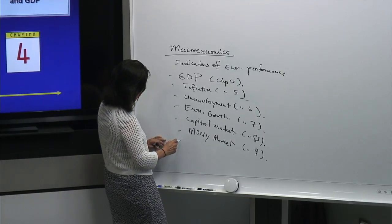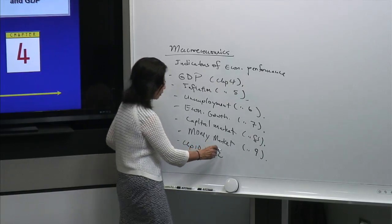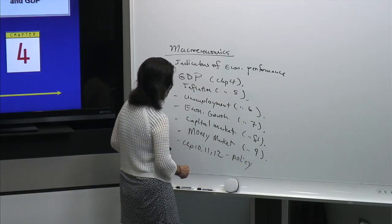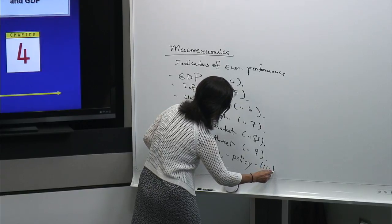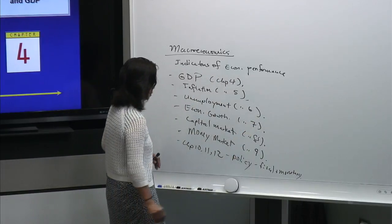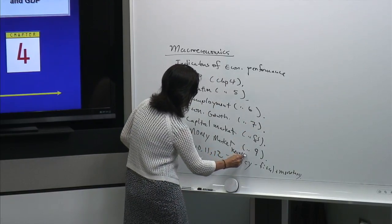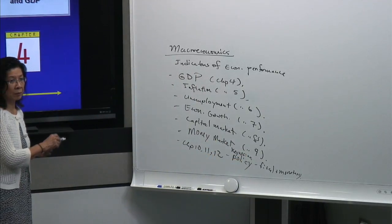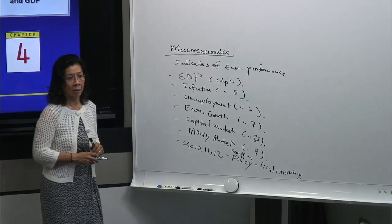After that, chapters 10, 11, and 12 deal with policy — fiscal policy and monetary policy basically. This is actually our Keynesian model. That's just a quick overview of what we will cover in the macroeconomic section, which is the second half of your ECN 50-30.